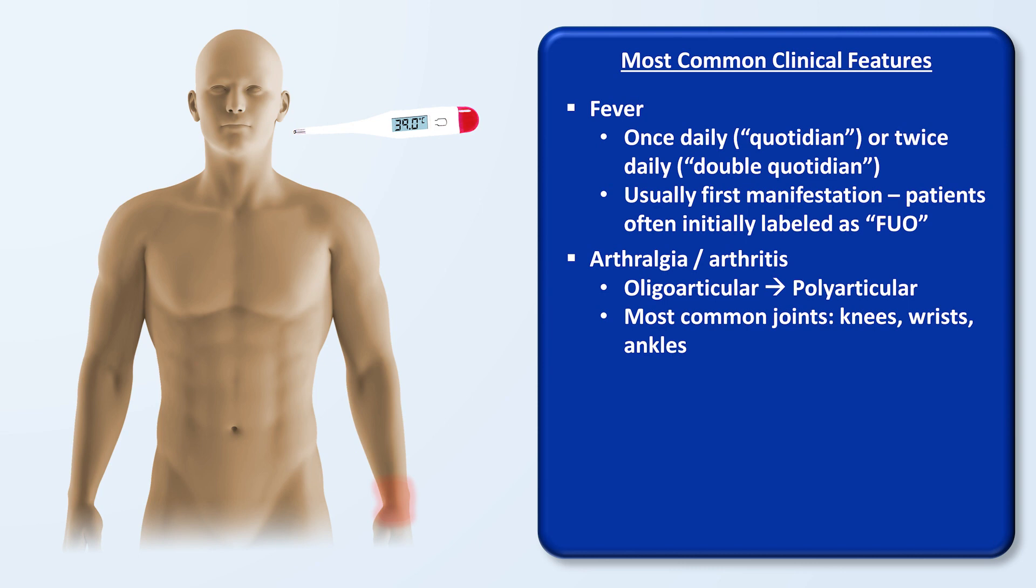And there is a classic rash. It's described as evanescent, meaning it comes and goes quickly, usually with the fever. It's classically described as salmon-colored, but this is only in fair-skinned patients.